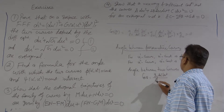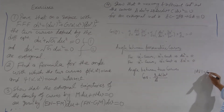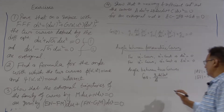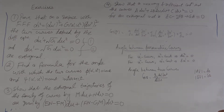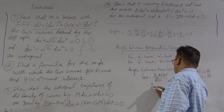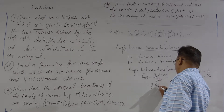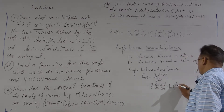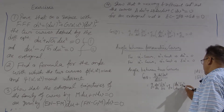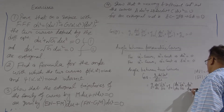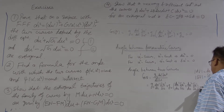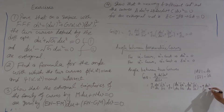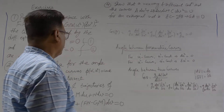Mod of dr I can write down as ds, and mod of δr I will write down as δs. This we already know. And this will become g₁₁ du¹/ds · δu¹/δs plus g₁₂ du¹/ds · δu²/δs plus du²/ds · δu¹/δs plus g₂₂ du²/ds · δu²/δs. So this formula gives the angle between two curves over a surface.